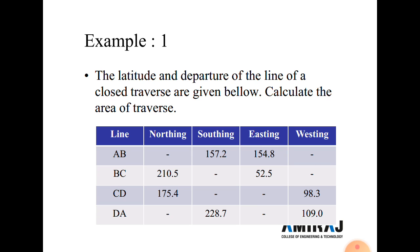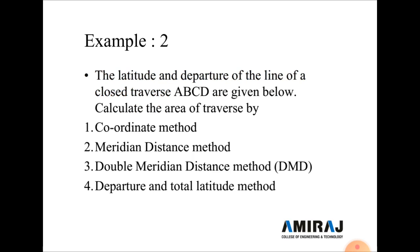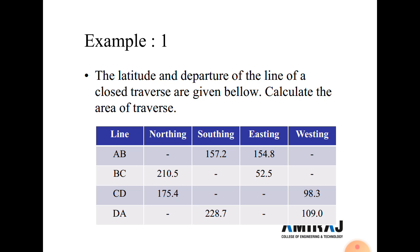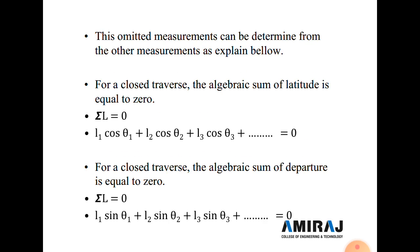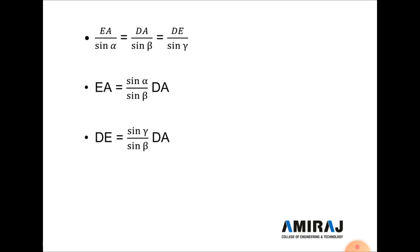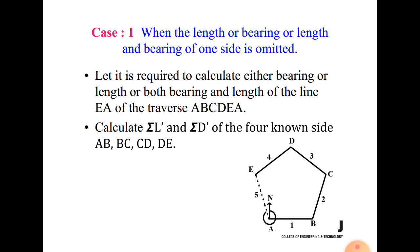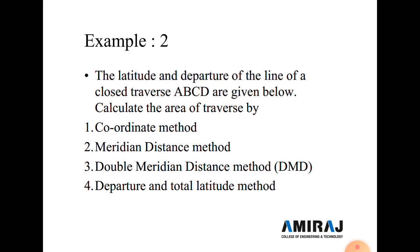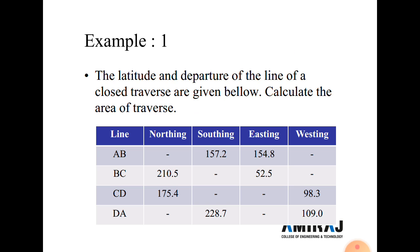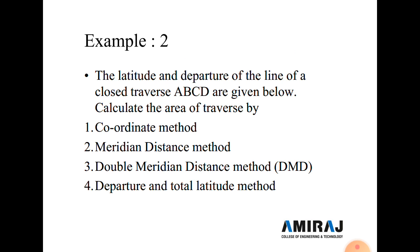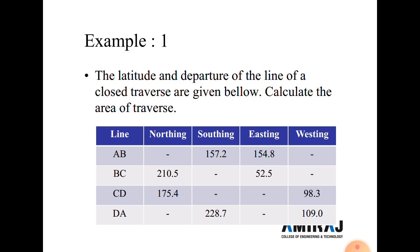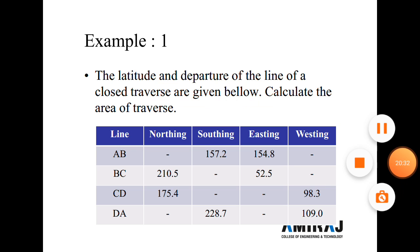Now let's start different examples. Example number one: the latitudes and departures of the lines of a closed traverse are given — calculate the area of the traverse. North-south and east-west directions are already given. This type of example is asked in G2 for four marks. In the next lecture we will start an example calculating the closed traverse using latitude and departure. Thank you.